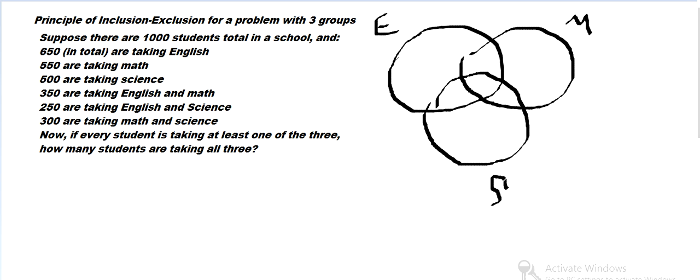And then we're given information about how many are in the intersections of English and Math, Science and Math, English and Science. And we're told that every student is in at least one of these. So that tells us another way to say that is the union of the three is 1,000. And we want to know how many students are taking all three.